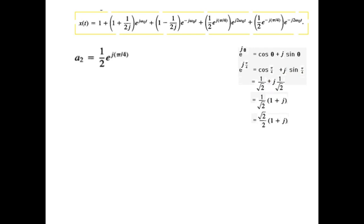So Ej pi by 4 cos pi by 4 plus j sin pi by 4. And putting the values and so we get under root 2 divided by 2, 1 plus j. So half multiply by this term and this is equal to under root 2 over 4, 1 plus j. So this is for A2.